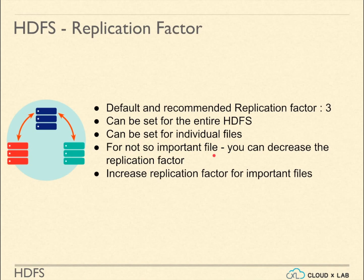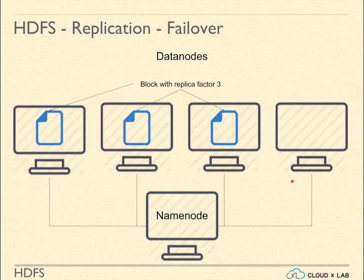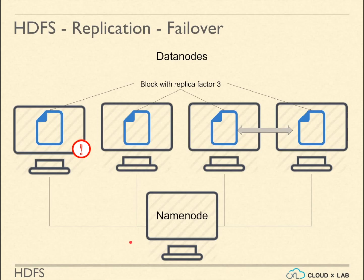For files which are not important, we can decrease the replication factor, and for files which are very important, we should increase the replication factor. Whenever a data node goes down or fails, the name node instructs the data nodes which have copies of the lost blocks to start replicating these blocks to other data nodes, so that each file and directory again reaches the replication factor assigned to it.